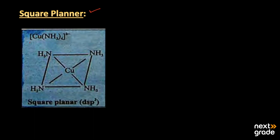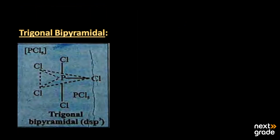The second geometry is square planar. The example is copper tetraammine [Cu(NH3)4]²⁺ — the copper is the central atom attached to four amino (NH3) groups at its corners, making a square shape. That is why this is called the square planar shape of complex compounds.